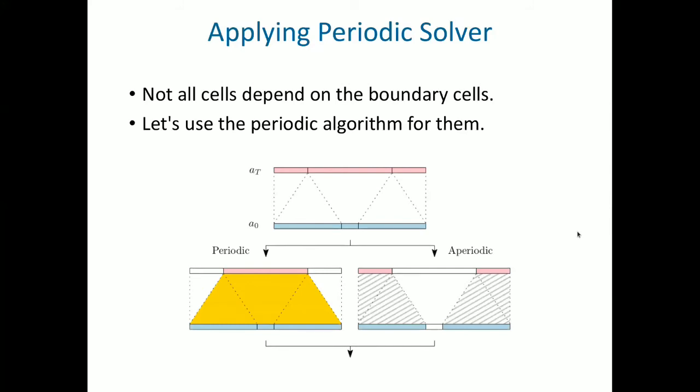So first off, here's the idea behind applying the periodic solver. We have some initial data here in blue and some final data here in red that we want to compute. The center of this final data, the large block in the middle, can be computed with a periodic solver, since the boundary conditions only extend their influence to these red blocks on the edges. Now, the periodic solver does give us values for these edges, but these are incorrect values. So we need to correct them. And we'll correct them using some sort of recursive divide and conquer strategy on these blocks.